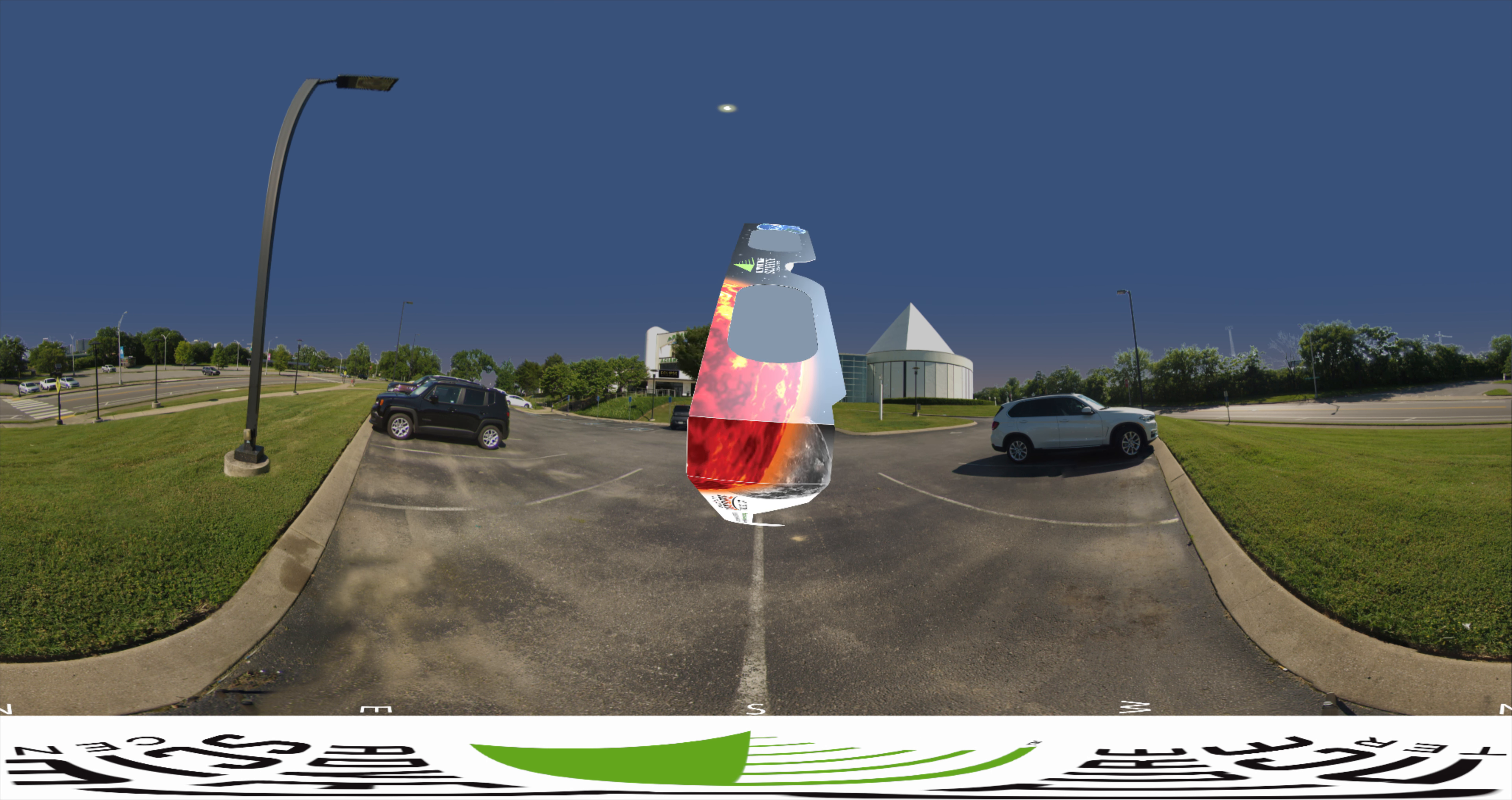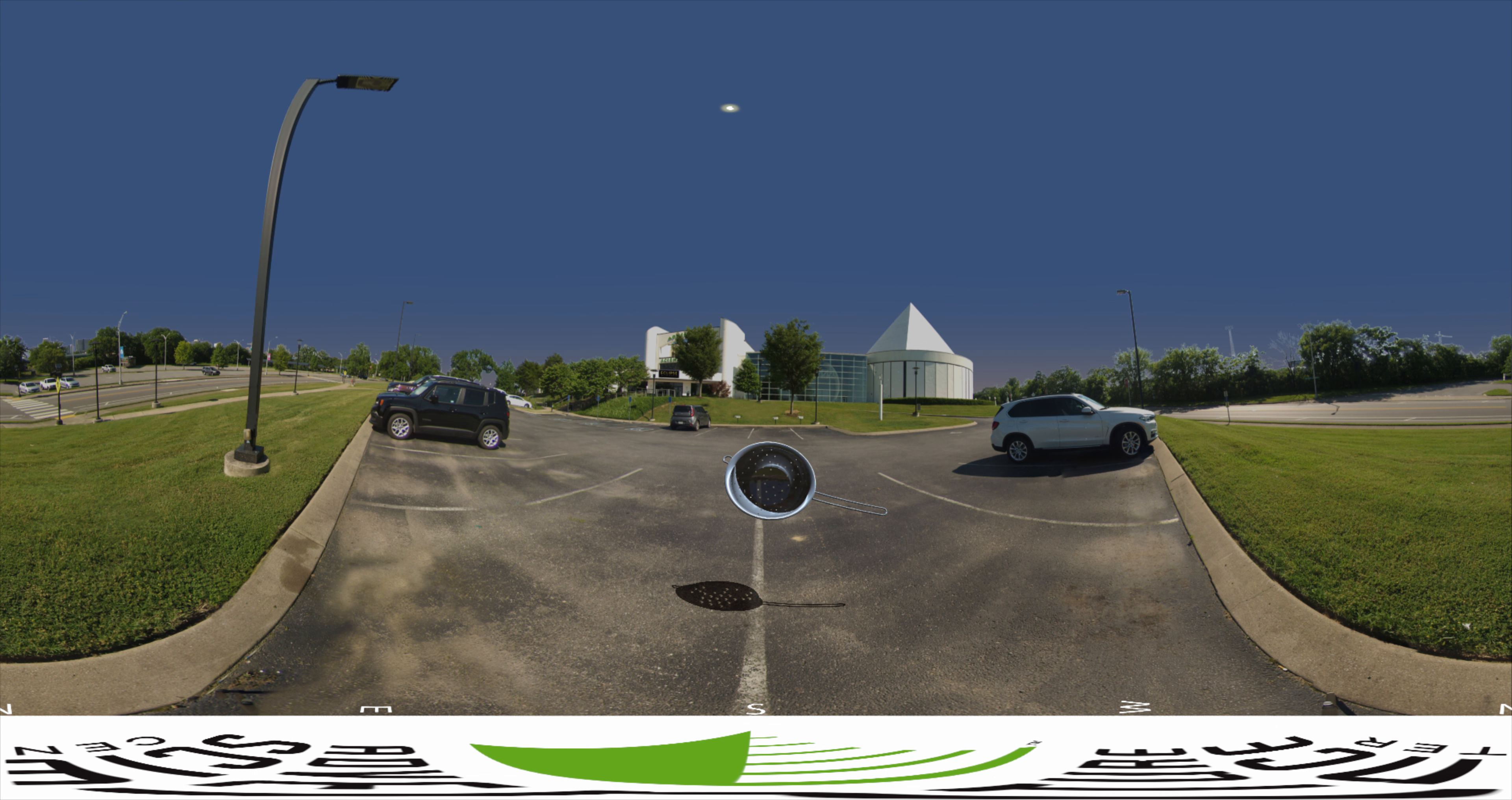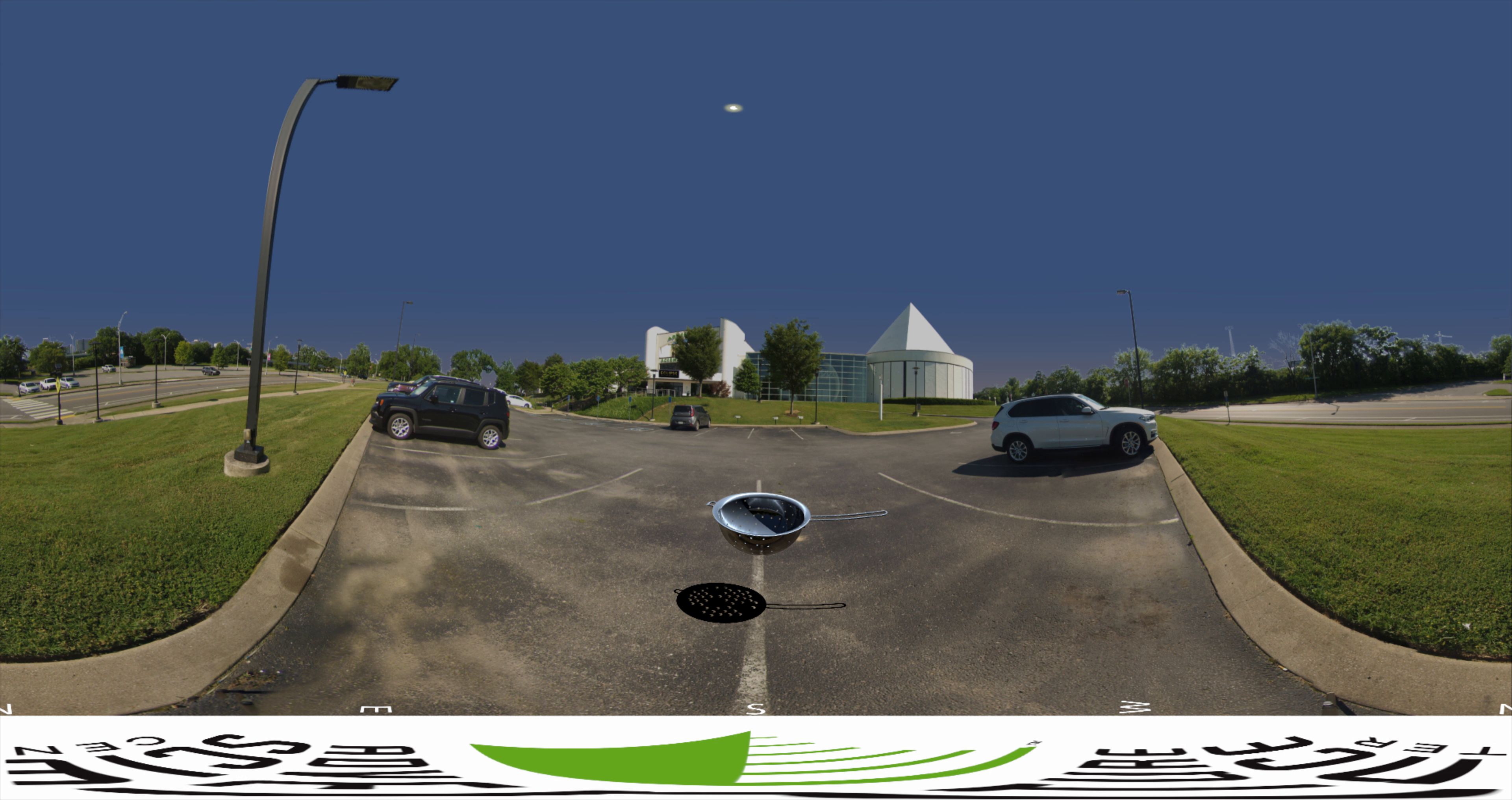Another fun way to view the partially eclipsed sun is to look at the shadows cast by the leaves on trees. The gaps between the leaves act as pinhole projectors and you may see dozens or even hundreds of crescent images on the ground. Or you could use a colander or a piece of cardboard with a small hole poked in it.